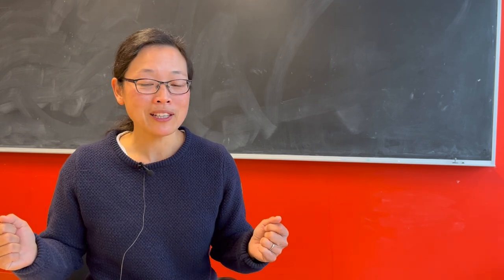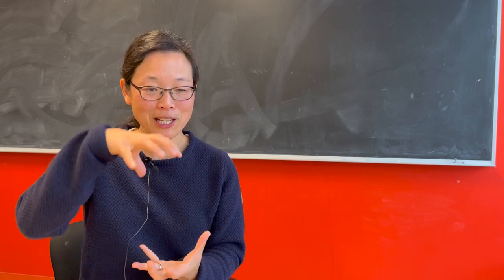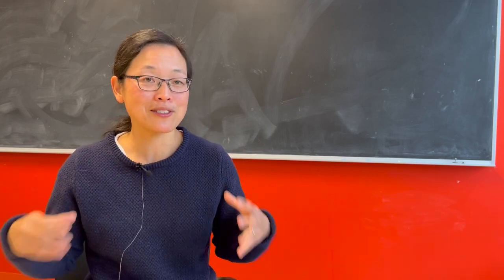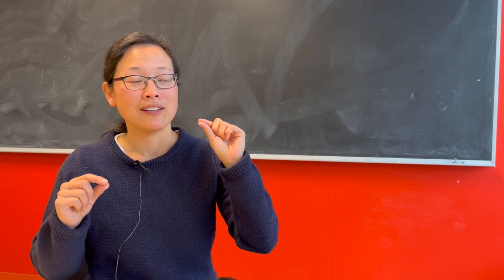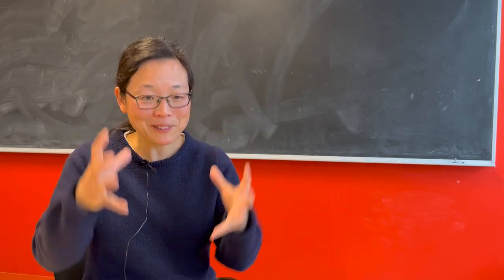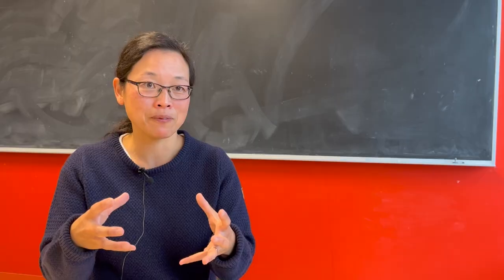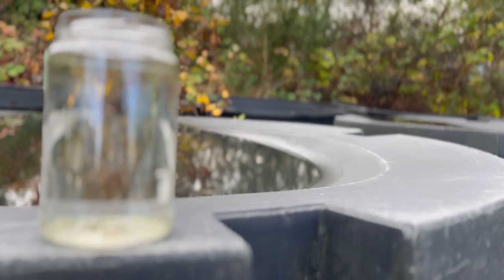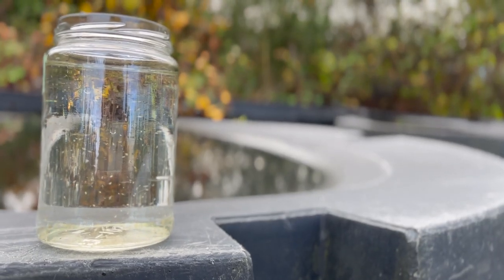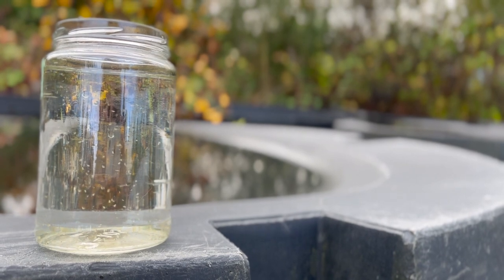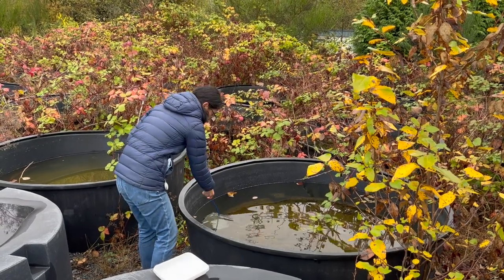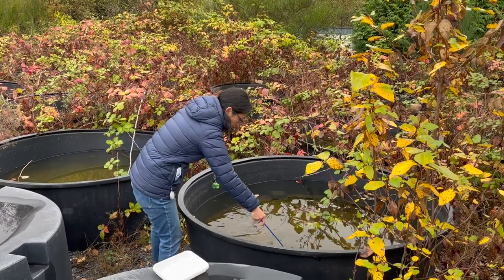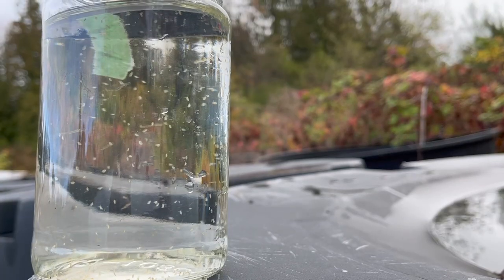We experimented with different shapes and sizes of containers until we found one where we could grow this insect predator in the same physical space as the Daphnia. Luckily it was just a very simple 750 milliliter glass jar that was kind of more long than wide.